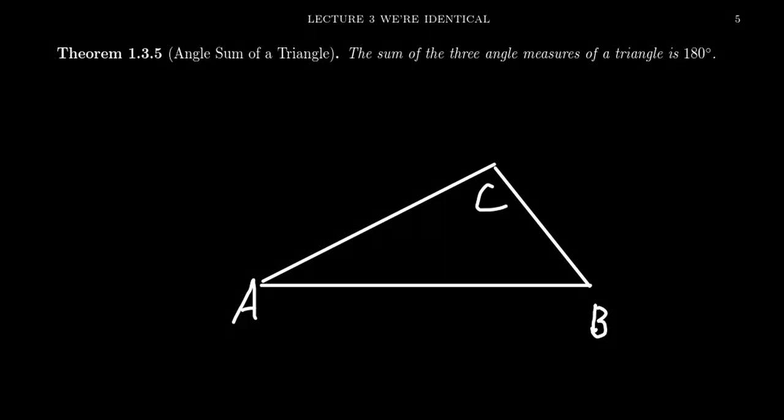In this video, we want to discuss a very cherished truth from geometry, commonly known as the angle sum of a triangle theorem. That is to say that if you have a triangle, like this ABC triangle on the screen, the sum of the three angle measures of every triangle is going to add to 180 degrees.